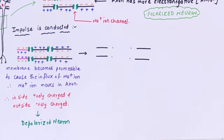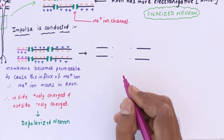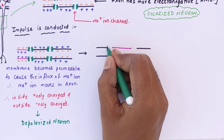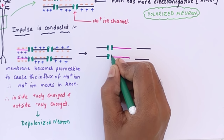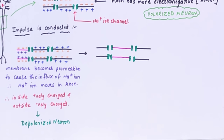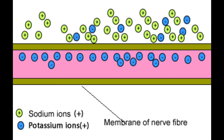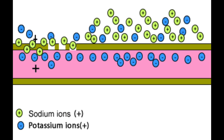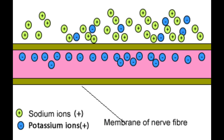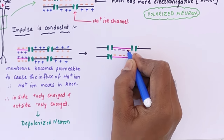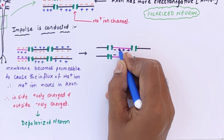Now the impulse travels to the next section, and the first part becomes normal again. The Na+ that was inside moves outside, and K+ from outside moves inside. For every three Na+ ions that leave, two K+ ions enter, just to balance the charge. This depolarized neuron returns to its normal state and is now called a repolarized neuron.